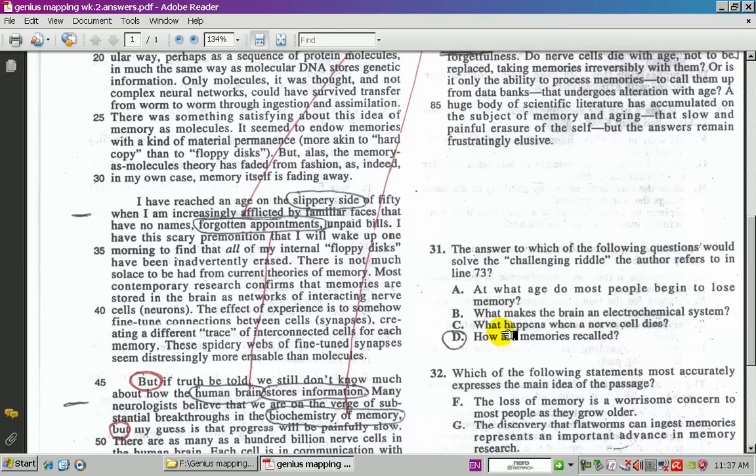Here, what happens to a nerve cell? That doesn't say anything about memory. B says, electrochemical system. That doesn't say anything about memory. Questions will revolve around the central theme. The central theme here is remembering, or memory. We're not sure how it quite works. If you look at answer B and C, they're not even on the central theme. Go ahead, cross those out. We're left with A, and we're left with D.